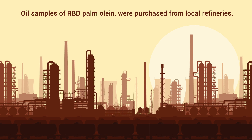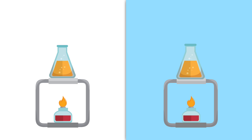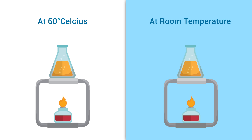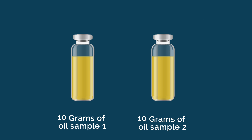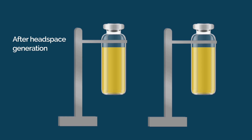The oil was stored at two different storage temperatures — one at 60 degrees Celsius and the other at room temperature. Data was collected every two days for a duration of 52 days. To carry out the experiment, 10 grams of each oil sample was weighed into septa-sealed vials.